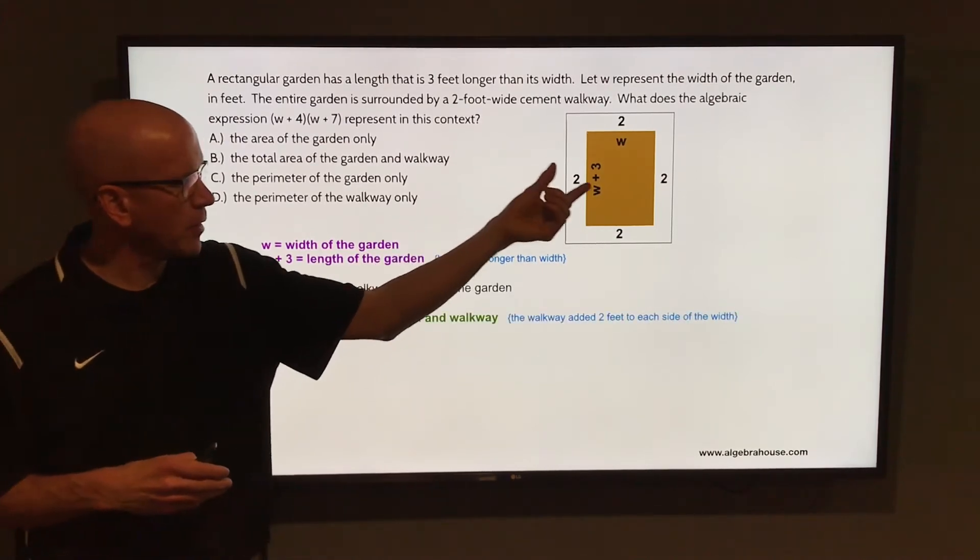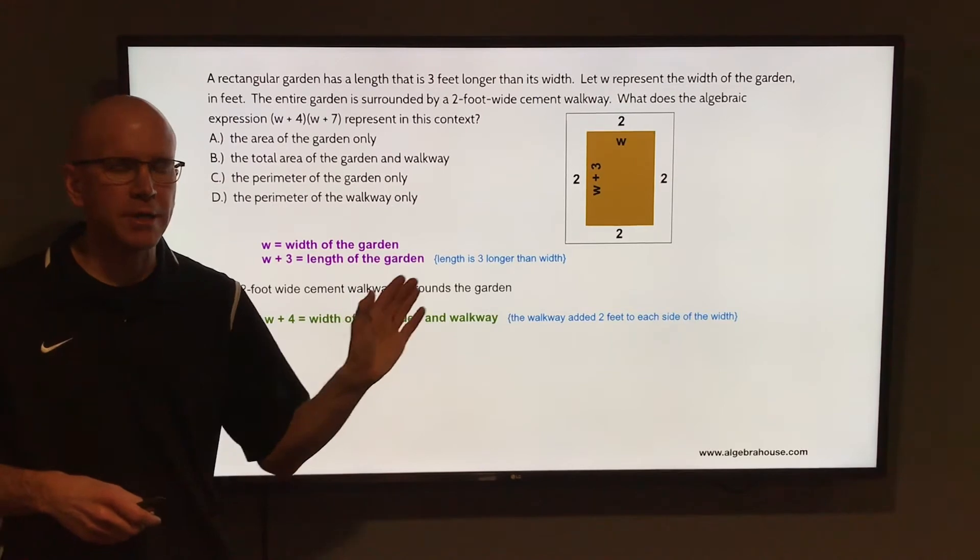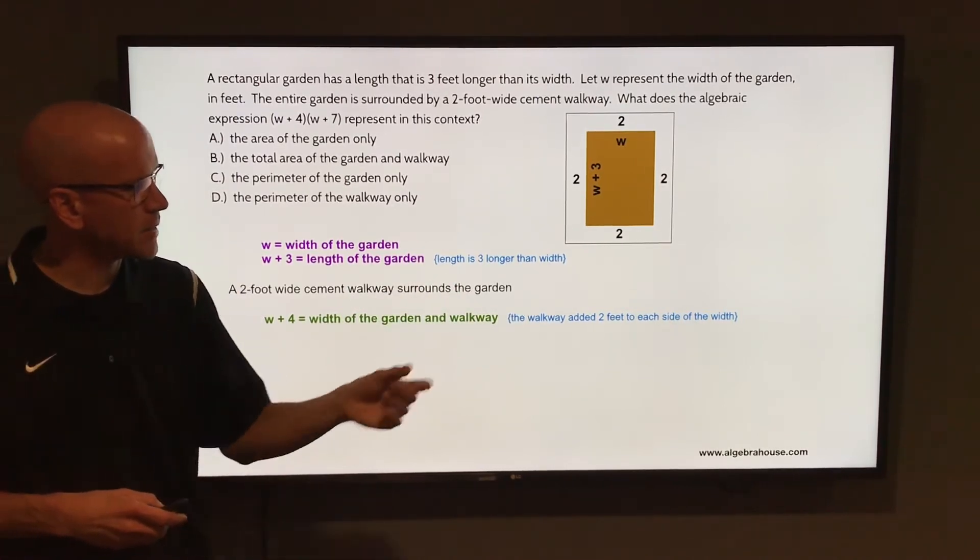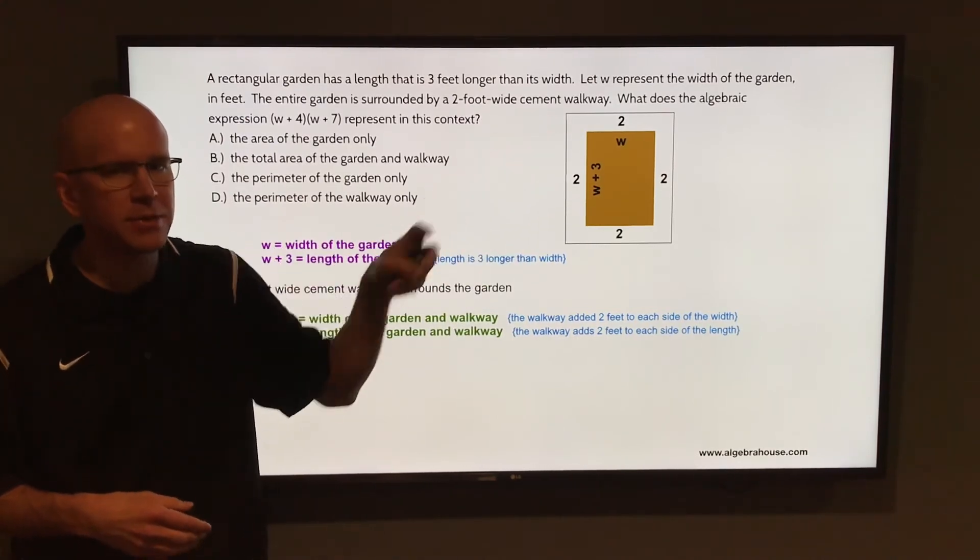So the width of the garden with the walkway would be W plus four because you're adding two onto each side, and the length of the garden and the walkway would be W plus seven because you're adding two onto each side there.